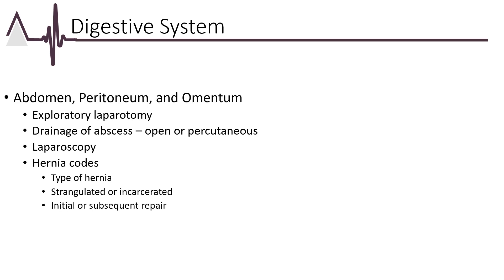The abdomen, peritoneum, and omentum subheading contains the code for an exploratory laparotomy. Codes for drainage of peritoneal, subdiaphragmatic, and retroperitoneal abscesses are selected based on whether completed by open procedure or percutaneously; percutaneous procedures instruct the coder on use of radiological supervision and interpretation codes. Code 49320 is used to report a diagnostic laparoscopy of the abdomen, peritoneum, and omentum. The 2023 CPT brings major revision to abdominal hernia codes, bundling epigastric, incisional, ventral, umbilical, and spigelian hernias into combination codes depending on whether hernias are initial or recurrent, reducible or incarcerated, and the size being repaired.